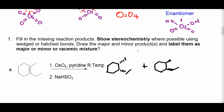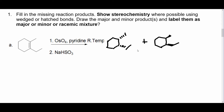Let's look at examples. The question asks to fill in the missing reaction products showing stereochemistry using wedge and hashed bonds, and to label them as major, minor, or racemic mixtures. We're doing syn addition of two OHs. If adding from the top, that's one product; if adding from the bottom, the two OHs come from the bottom and the methyl and other group are pushed up. These are a racemic mixture — the enantiomers are equally likely.